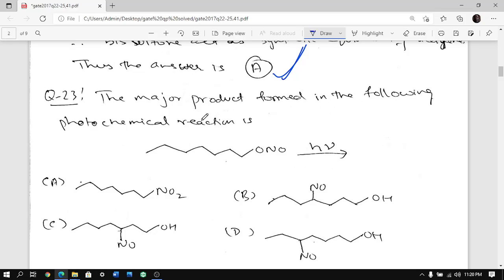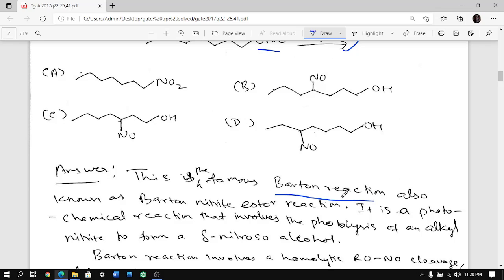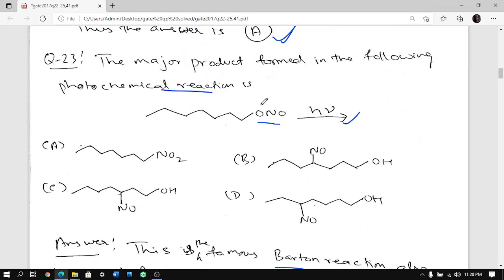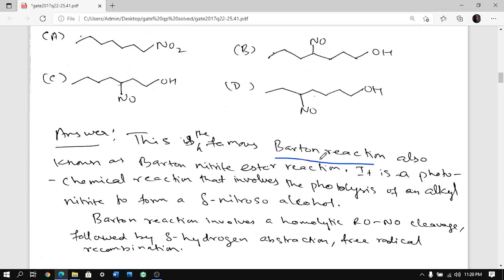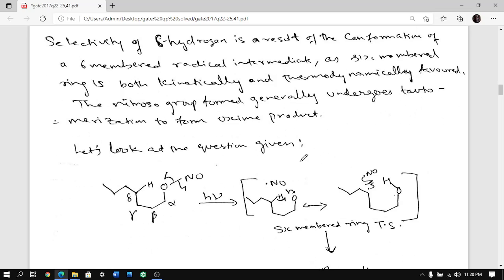Moving on to the next question. Next question also very direct. It says the major product formed during the photochemical reaction is - so you are seeing ONO is there and hν is there. So this is the famous Barton reaction. Incidentally, I have done postdoc with Professor David Kreitch when I was in Wayne State University, and he was PhD student of Professor Barton. So this is his reaction, who used to work on all these radical reactions.